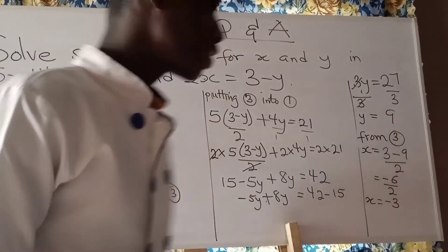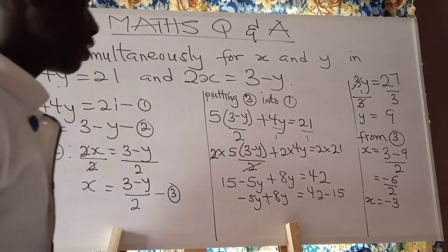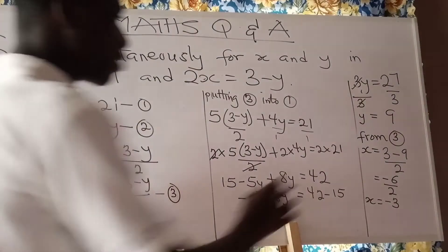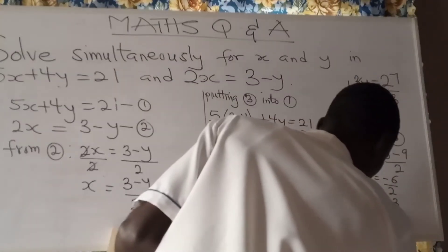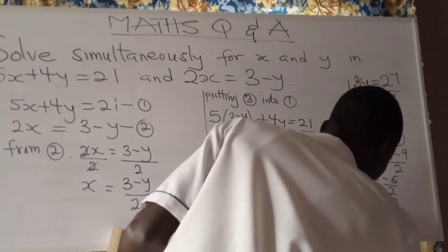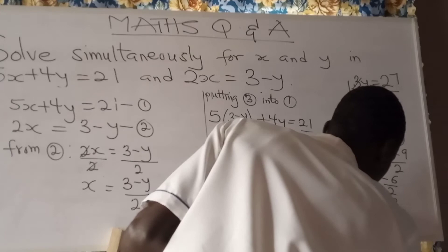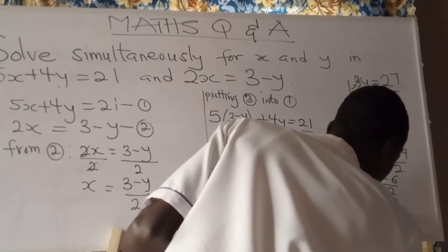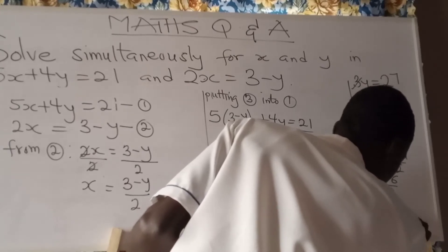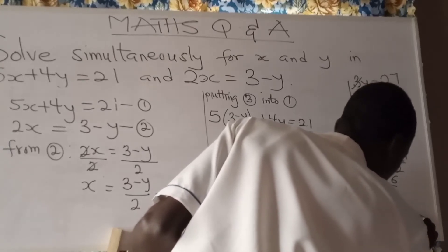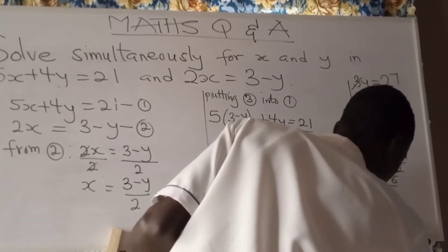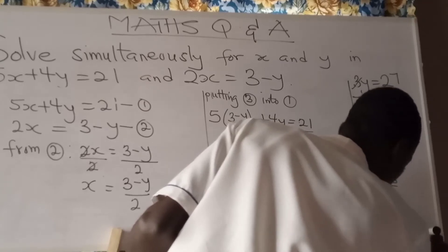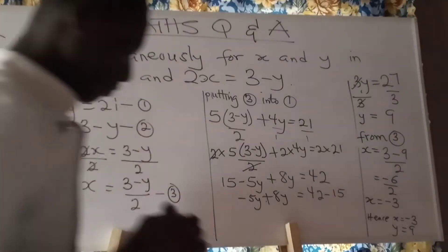So we have the value of x as negative 3, and the value of y as 9. Hence, x equals negative 3 and y equals 9.